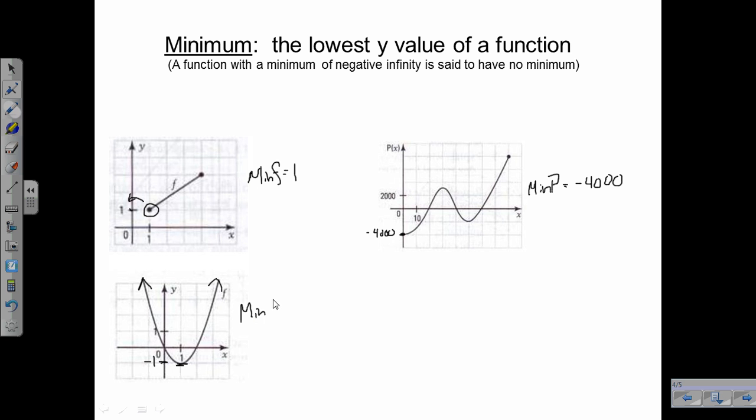One last example. In this case, we'll note it goes off to the bottom, and what that means is it will continue to the right and down. So in this case we're going to have no minimum. In other words, it would continue down to negative infinity forever.